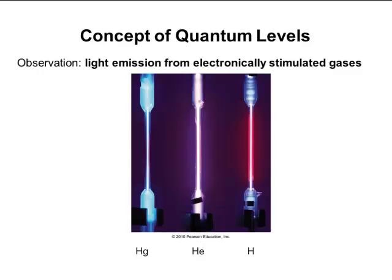We're going to be talking about quantum theory. Quantum theory is a theory that's going to help us explain what's happening to electrons inside an atom and where those electrons are located. This concept of quantum theory is going to start with something called quantum levels. An observation that's going to help support this concept of quantum levels is going to be the light emission from electronically stimulated gases.